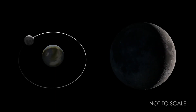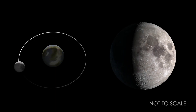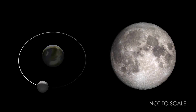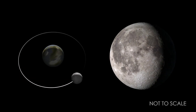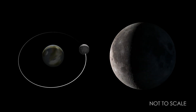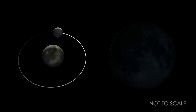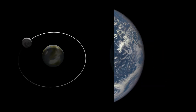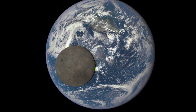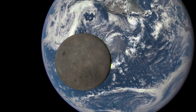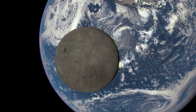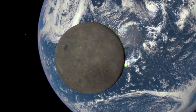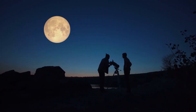Just like the full moon rises at sunset, the new moon always rises near sunrise. But we can't see the new moon during the day because the side of the moon the Sun is shining on is turned away from the earth at that time. And that pattern repeats over and over again.